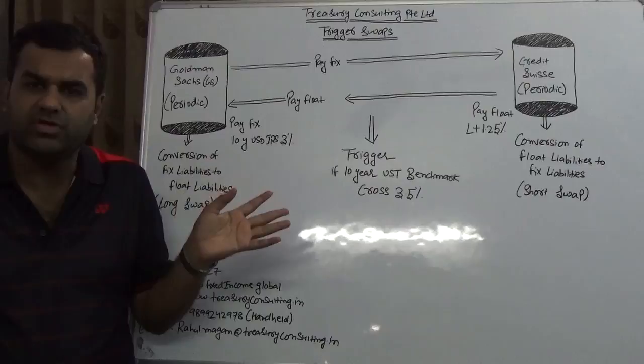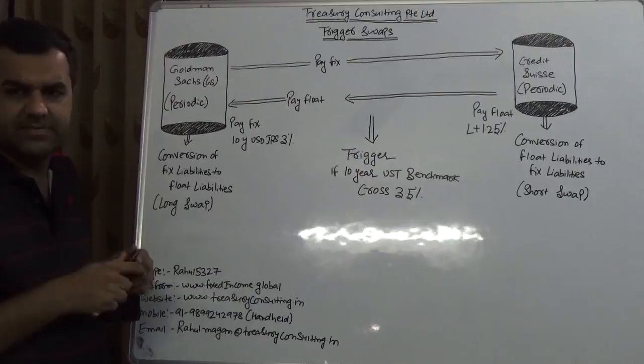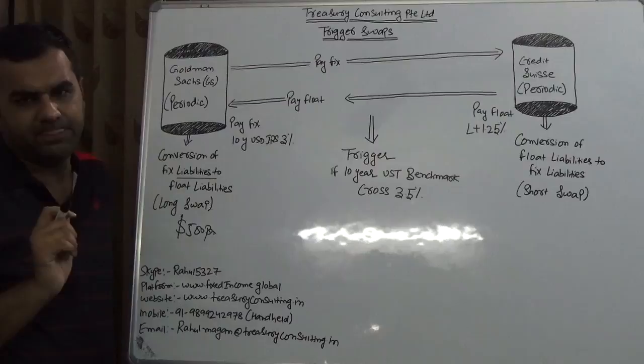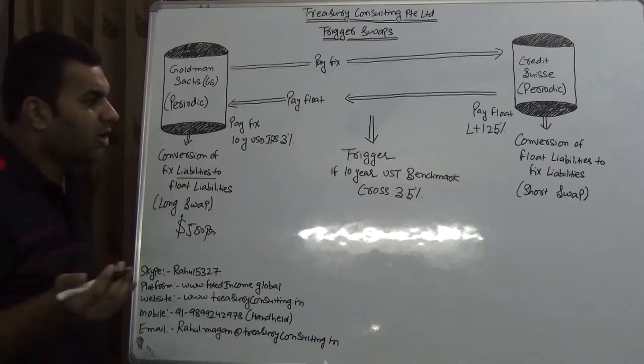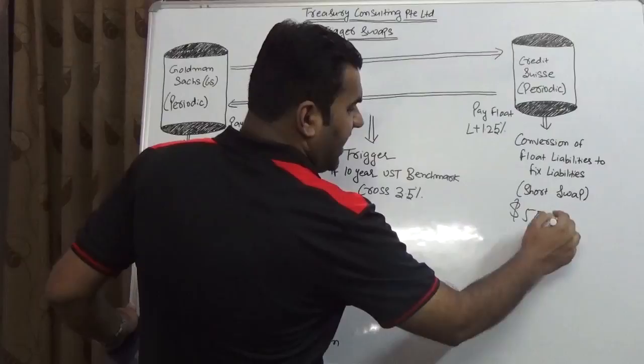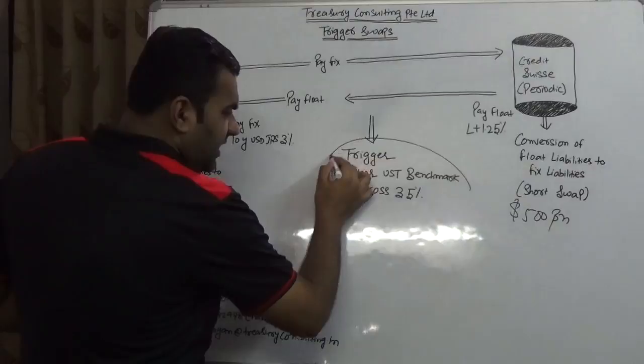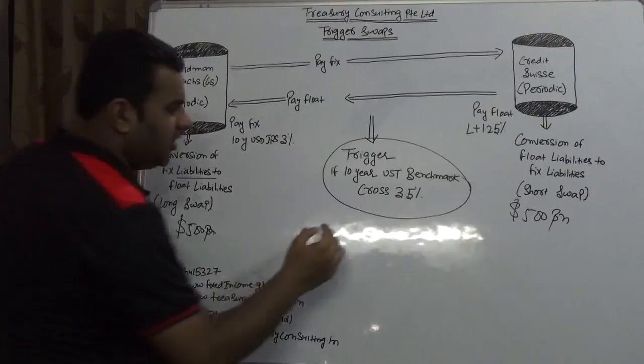Let me take a simple example. Goldman Sachs has $500 billion whereby they want to convert fixed liability to floating liability. This is Goldman's view - reason, I don't know. Credit Suisse, on the contrary, also has $500 billion, but they want to convert fixed liability to floating liability. The point of contention is the 10-year USD benchmark, and the man who needs no introduction because of which both are taking a call is Donald Trump.